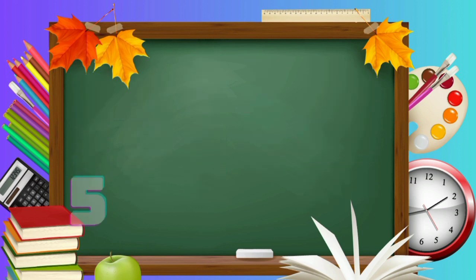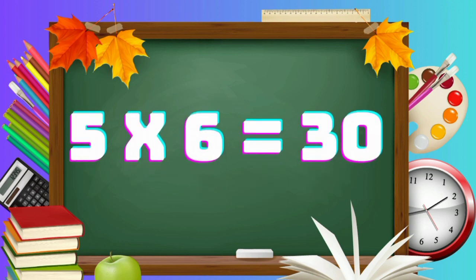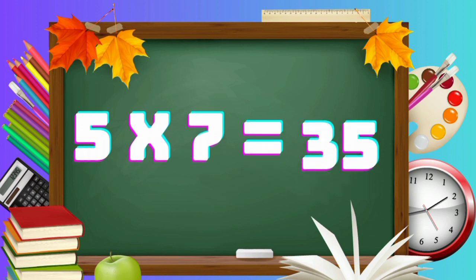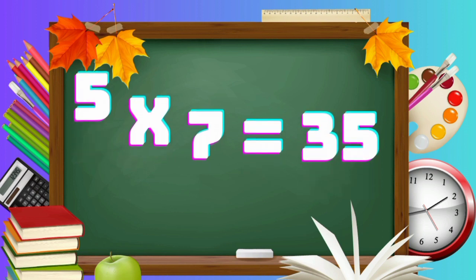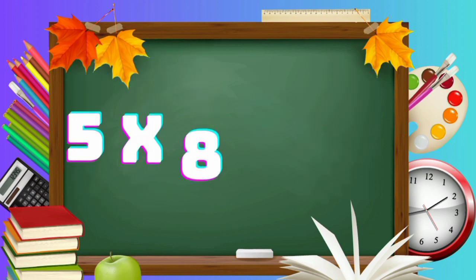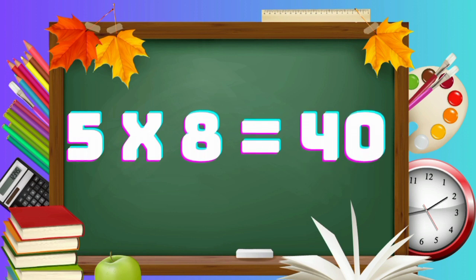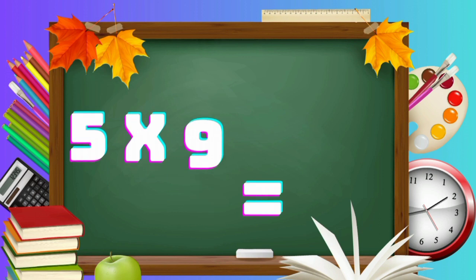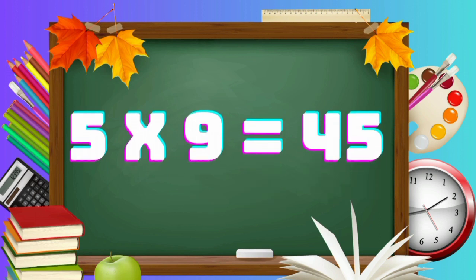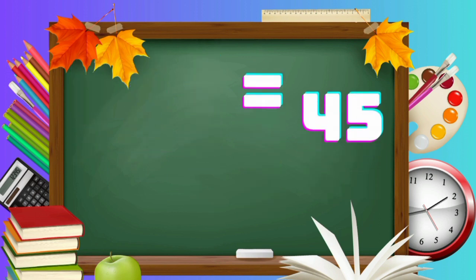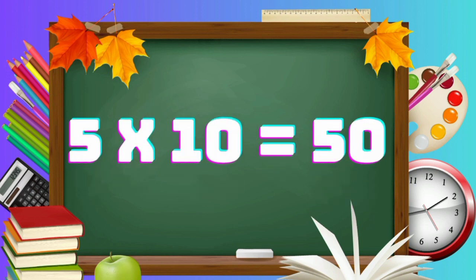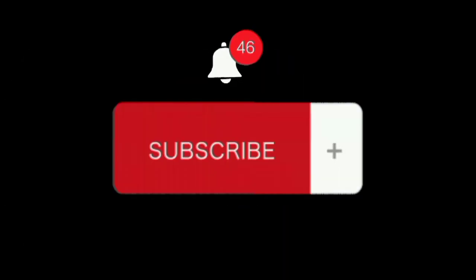Five sixes are thirty. Five sevens are thirty-five. Five eights are forty. Five nines are forty-five. Five nines are forty-five. Five tens are fifty. Five tens are fifty. Please like and subscribe.